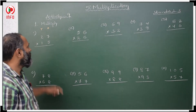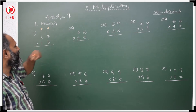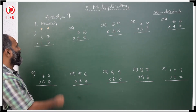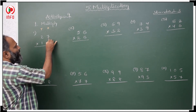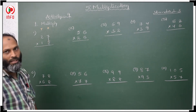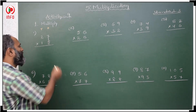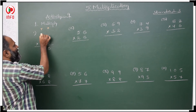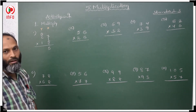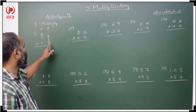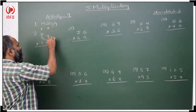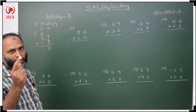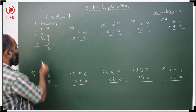Yes, now students, we have to multiply a two-digit number with a two-digit number. First we start with 5: 5 sevens are 35, write 5 ones and carry 3 tens. Again 5 with 2: 5 twos are 10, 10 plus 3 is 13. We have to write 13.